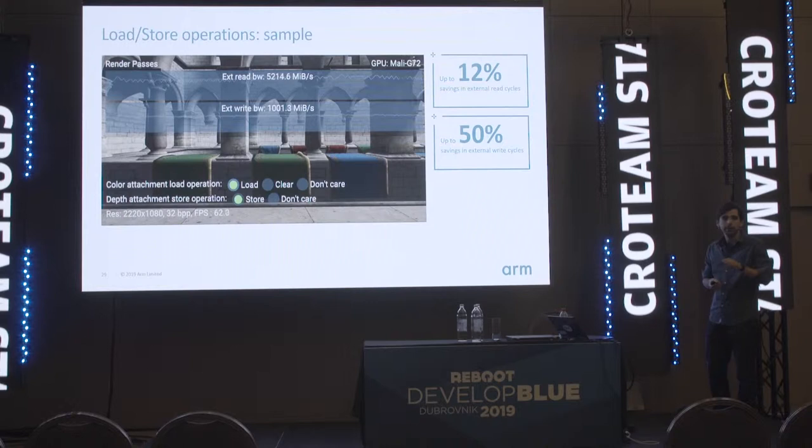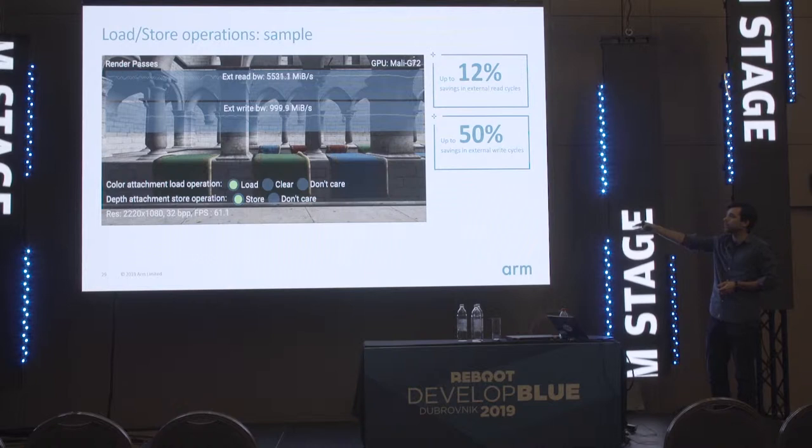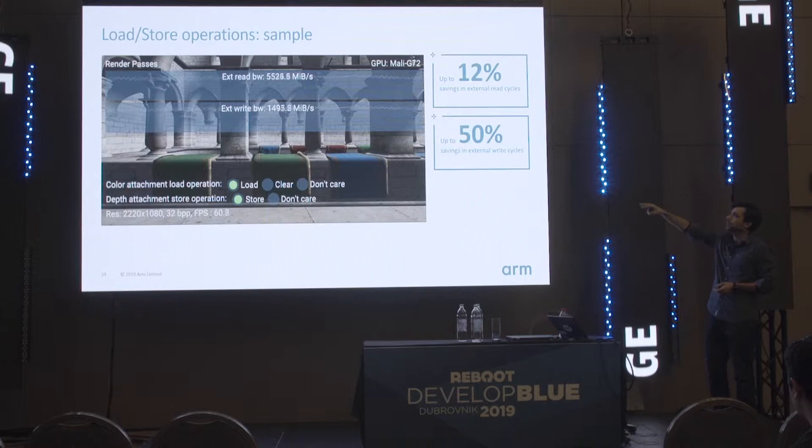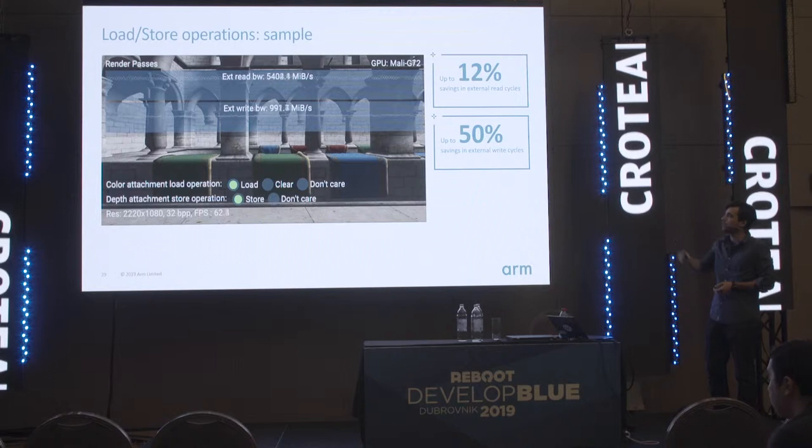The sample allows you to play around with different combinations of these values and monitor the effect on bandwidth. You can estimate bandwidth savings using the data displayed in the GUI: you have the resolution, bits per pixel, and current frame rate — roughly 300 to 400 megabytes per second — and that corresponds to the change in the curve as you toggle between load and clear, and store and don't care, for an uncompressed frame.